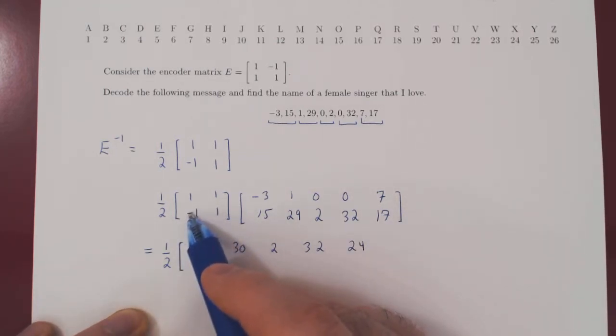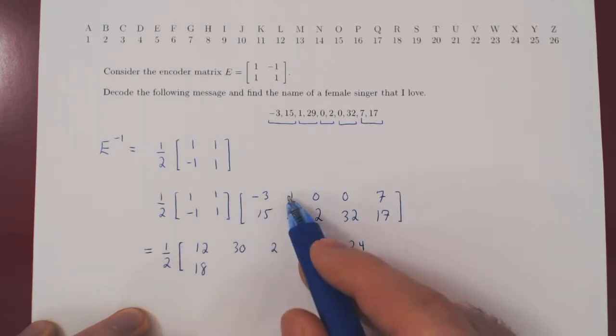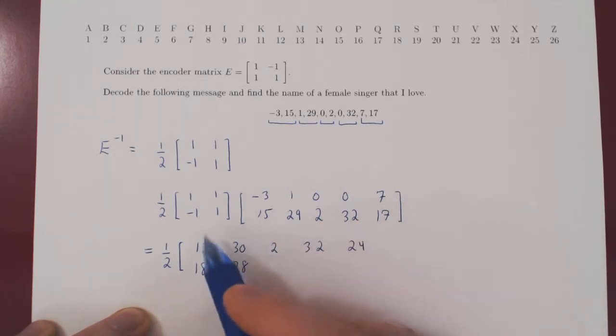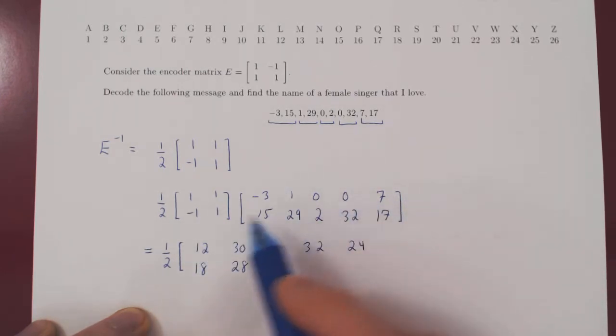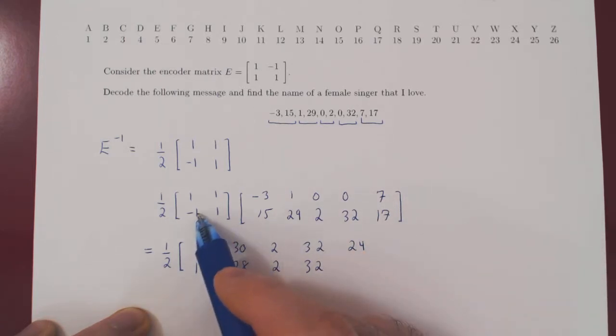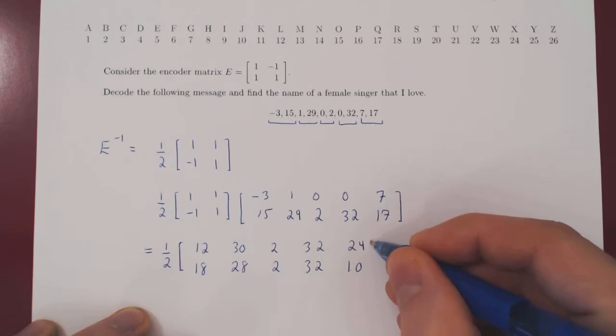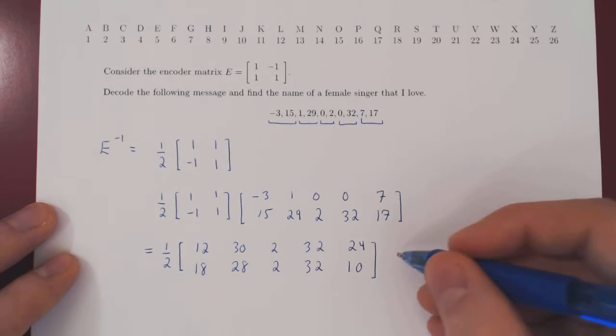Let's construct row 2 now. 3 plus 15, 18. Negative 1 plus 29, 28. 0 plus 2, 2. 0 plus 32, 32. Negative 7 plus 17, positive 10.